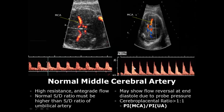The normal SD ratio of the MCA must be higher than the SD ratio of the umbilical artery. It may also show flow reversal at the diastolic section, which can be due to increased intracranial pressure caused by applying pressure with the probe.